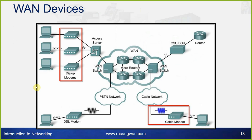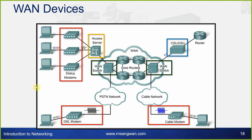WAN devices include dial-up modems, access servers, WAN switches, and routers. We also have cable modems and DSL modems — most users today use DSL modems for internet connectivity. A CSU/DSU and WAN switch connect diversified networks, while routers allow communication to find the path from source to destination.